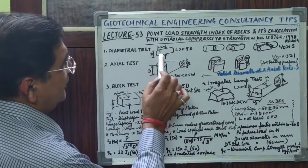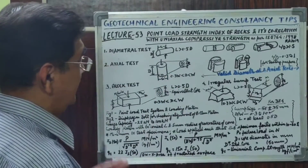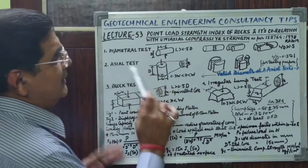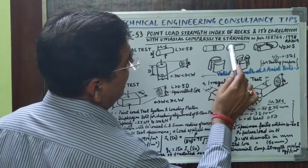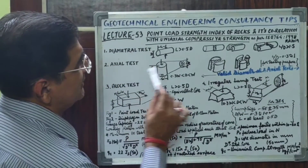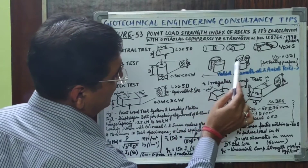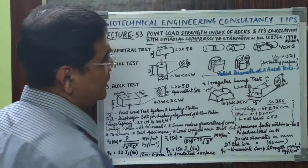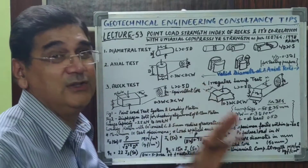In the diametral test, if the sample breaks midway or in two pieces or in three pieces, that is a valid test. Similarly in the axial test, if it breaks midway or in two or three pieces, then it is a valid diametral and axial test as specified in this code.